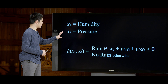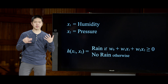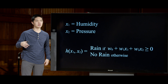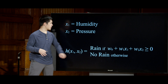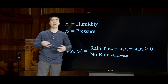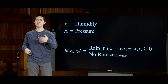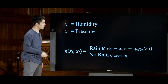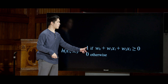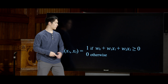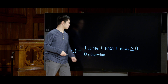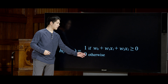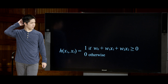We want to choose weights such that if you pass in a rainy day's humidity and pressure, the result is greater than or equal to 0, and if you pass in a not-rainy day's input, the output is not raining. For mathematical convenience, we'll often represent categories as numbers — 1 for raining and 0 for not raining. So if the dot product of weights and input is greater than or equal to 0, our hypothesis function outputs 1 (raining); otherwise it outputs 0 (not raining).